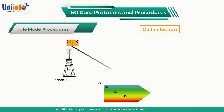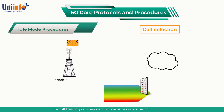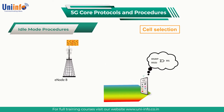Initial cell selection does not rely upon any stored information. The UE scans all the RF channels within its supported frequency bands. Scanning is based upon the synchronization raster, which is relatively coarse to reduce the number of candidate carrier frequencies and thus reduce the delay generated by band scanning.